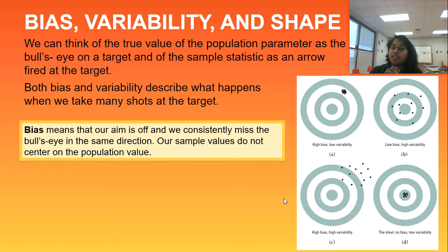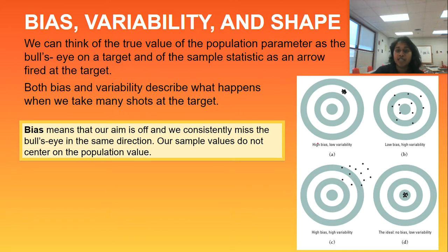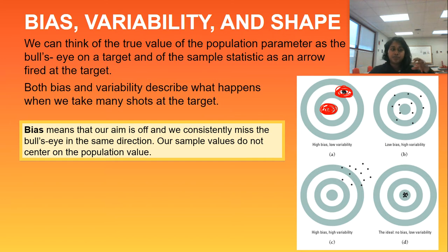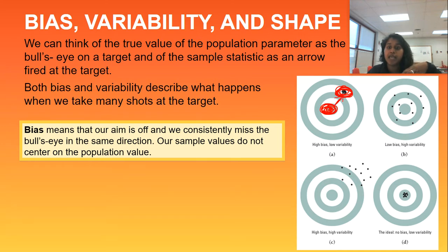Bias means that our aim is off and we consistently miss the bullseye in the same direction. Our sample values do not center on the population values. Here we have an example of high bias and low variability. We may not be near the population parameter, but all of our samples are consistent with each other — very low variability of the samples, but there's some discrepancy between the sample and the population itself.